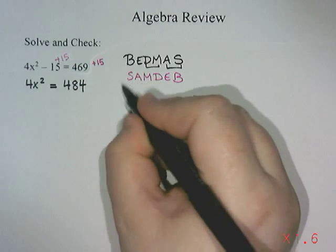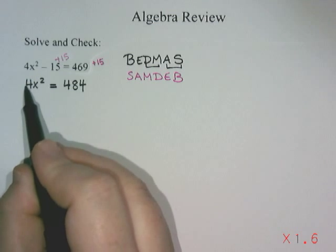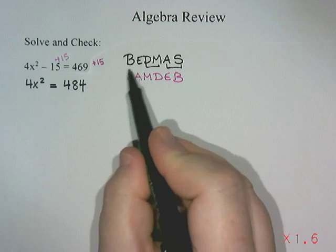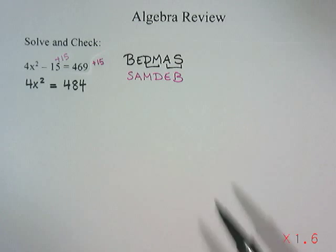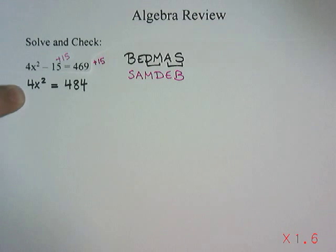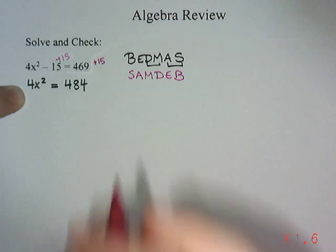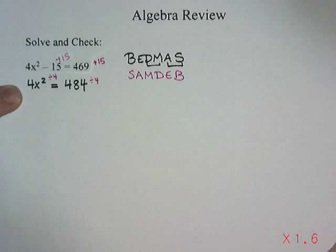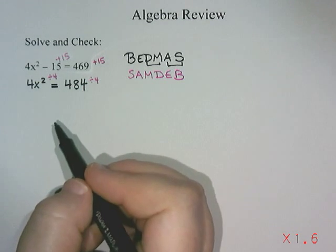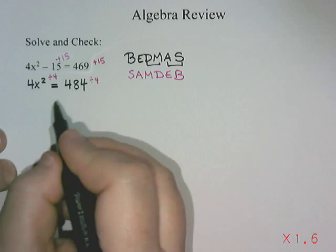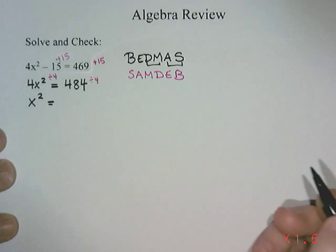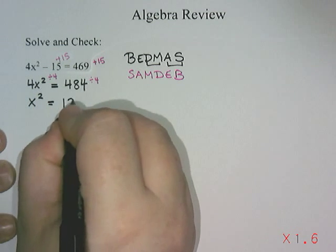I've done the addition and subtraction. Now I have multiplication — 4 times x squared. Multiplication and division is the next thing to move over, so I take the multiply by 4 and do the opposite, which is divide by 4 on both sides. 4 divided by 4 is 1, so this becomes x squared, and 484 divided by 4 is 121.